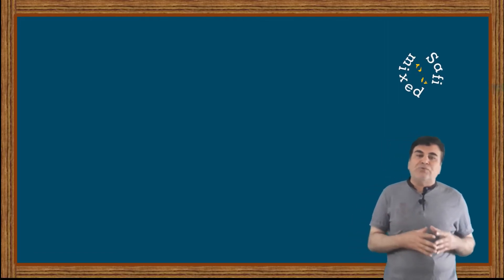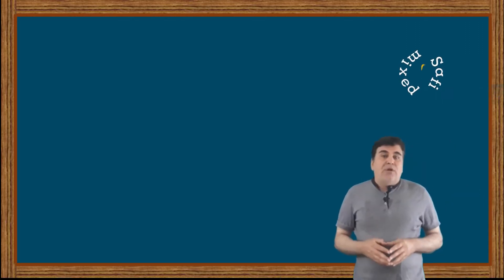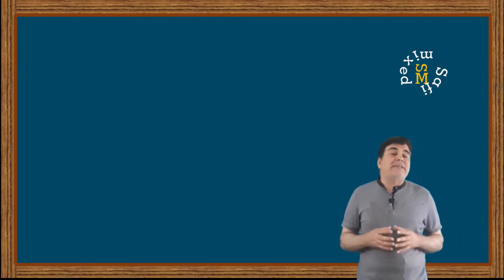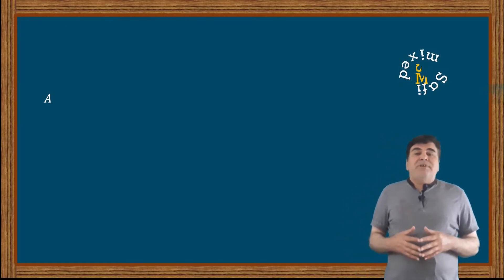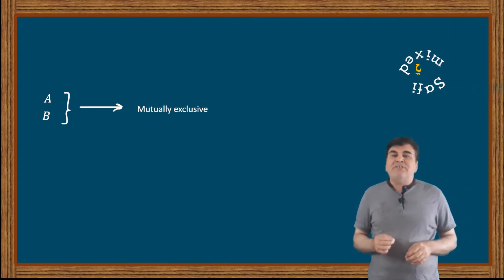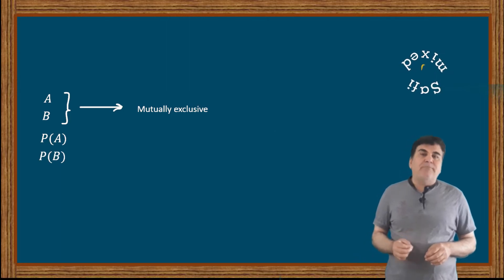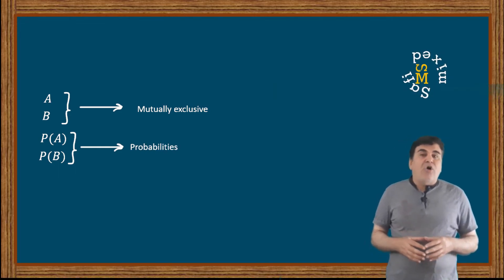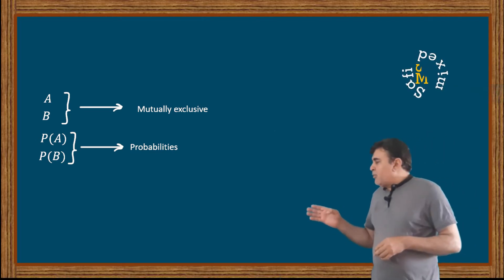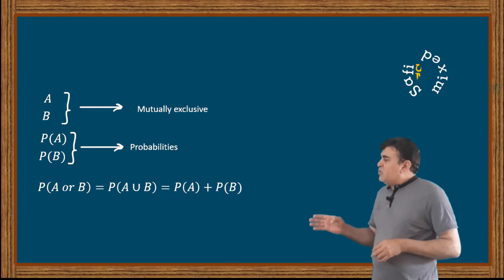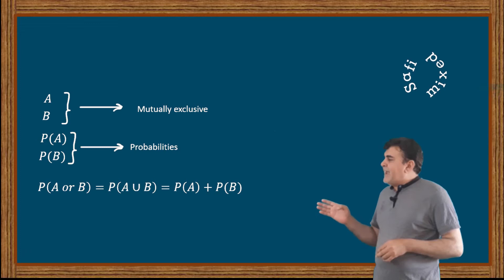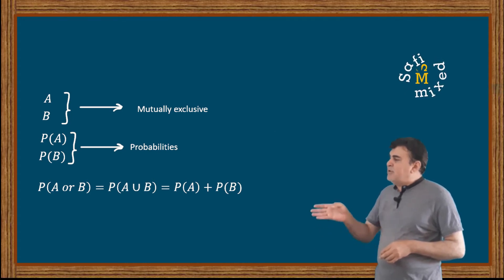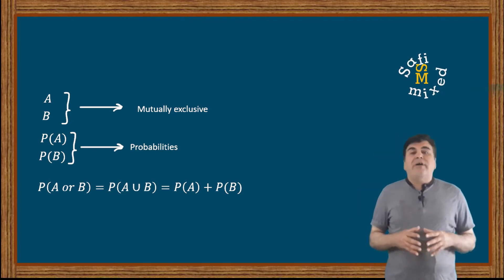If you don't know the difference, I would suggest you watch my video named 'Probability Part Two' in the playlist 'Probability Theory.' When two events are mutually exclusive, the joint probability of their occurrence is equal to the sum of their individual probabilities. For example, let A and B be two mutually exclusive events with respective probabilities P(A) and P(B). Then the joint probability — the probability of occurrence of A or B — is written as P(A or B) = P(A ∪ B) = P(A) + P(B).